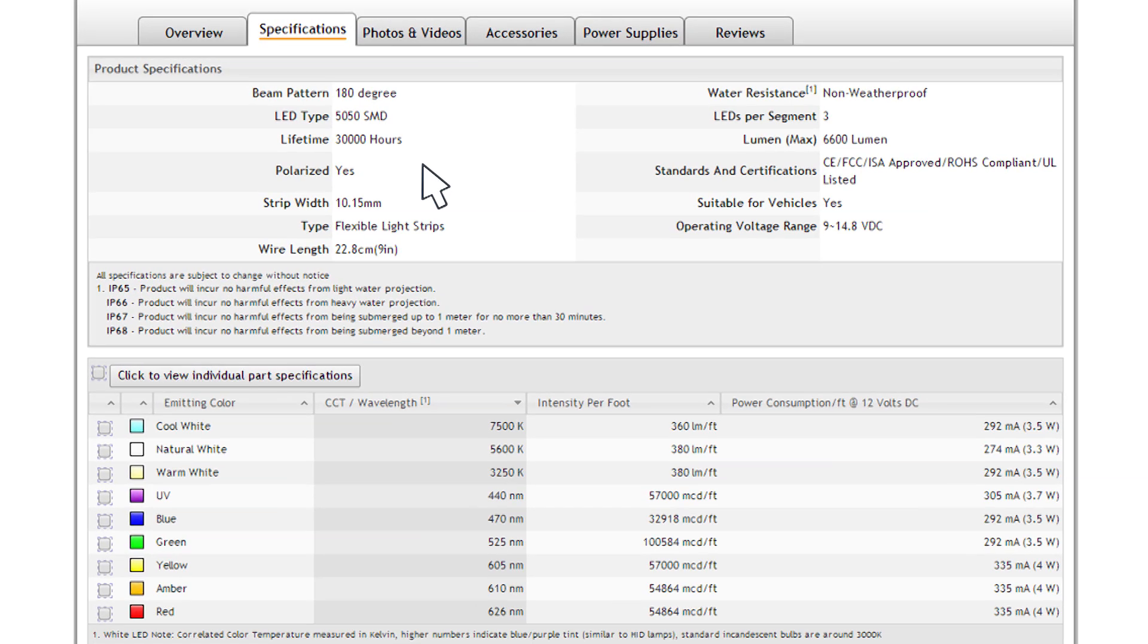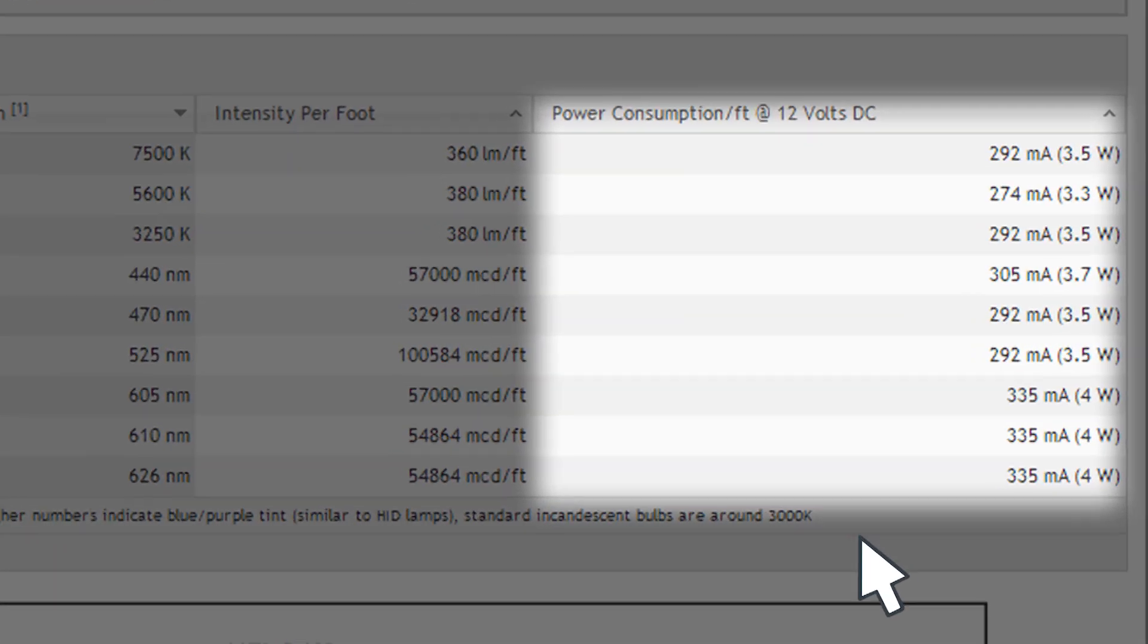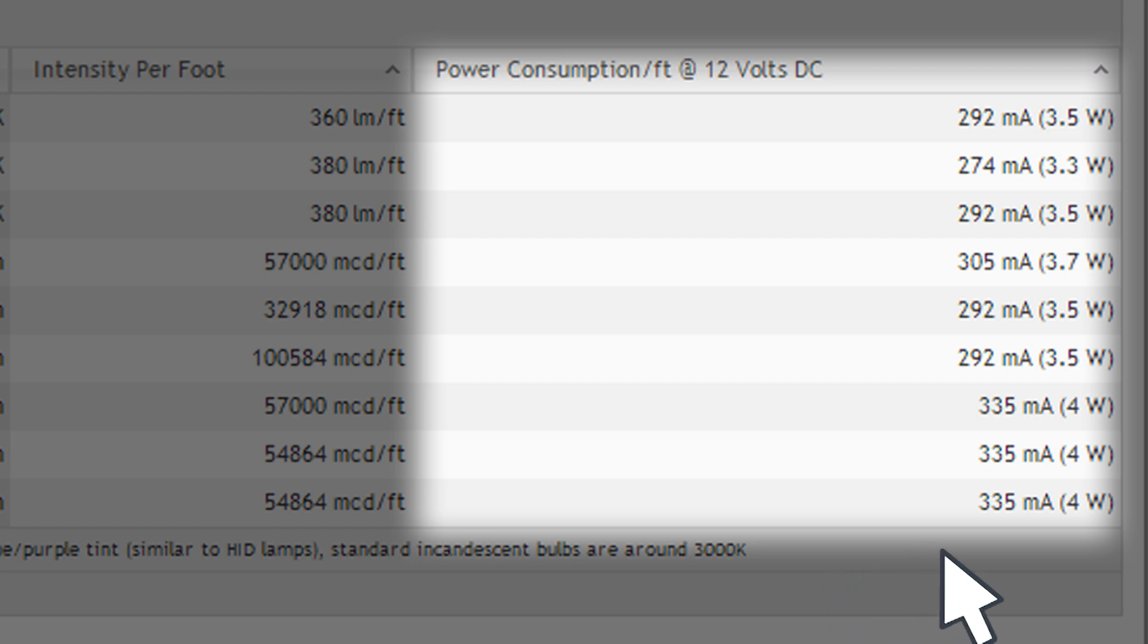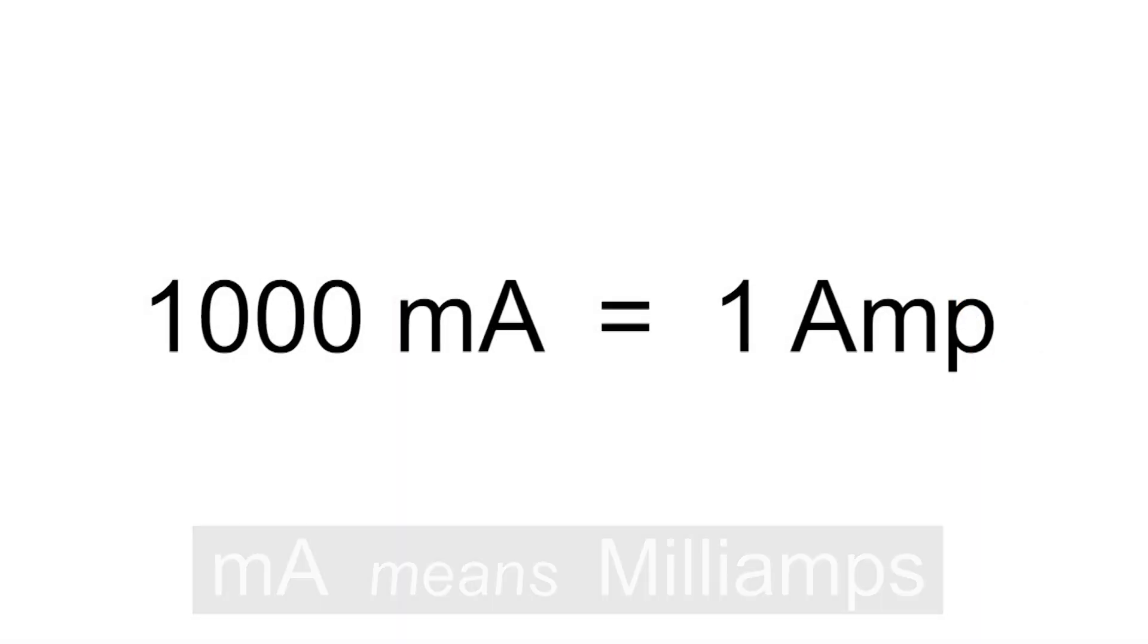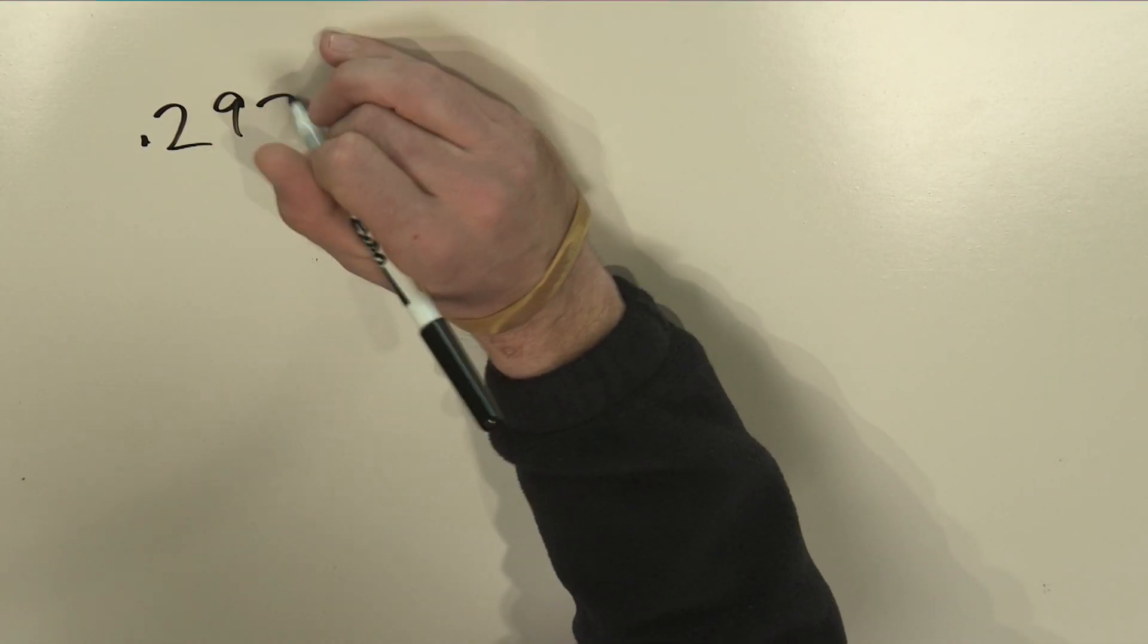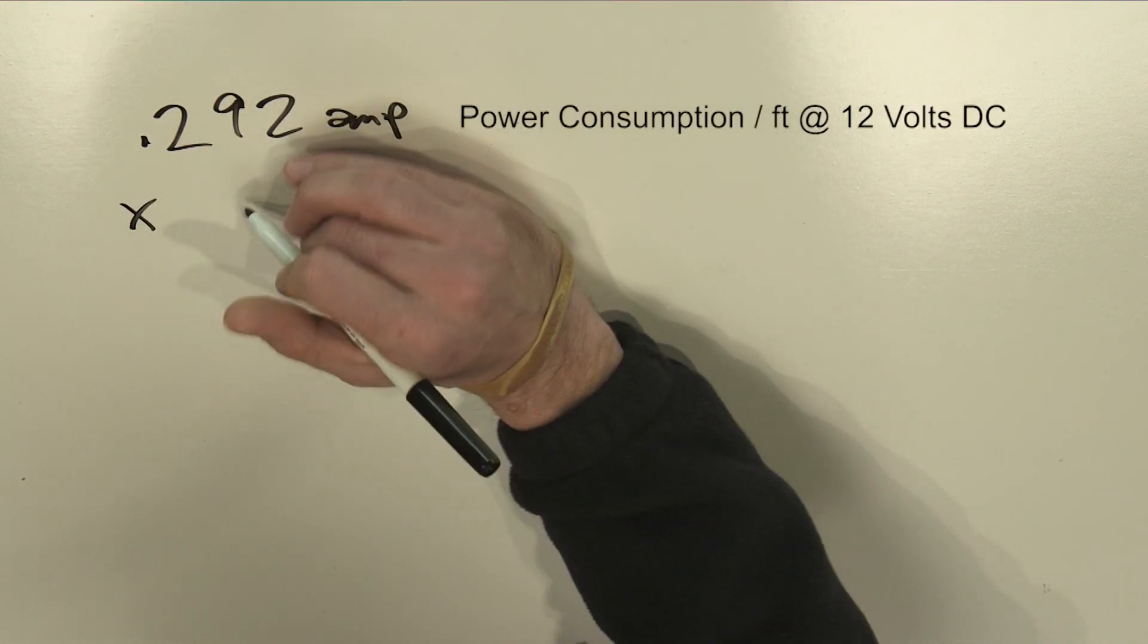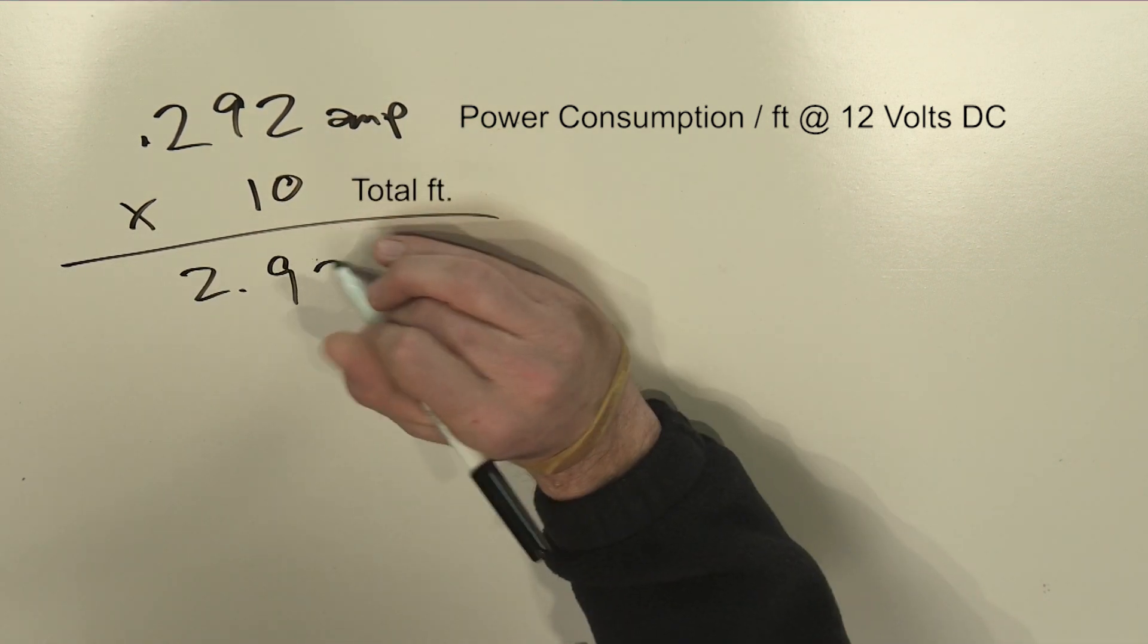On the product page for the strip, in that same column you'll also see a rated amperage per foot of the strip, listed in a number with MA. That MA is milliamps, and there are 1000 milliamps per amp. So if we have 292 milliamps, that's actually 0.292 amps, and if we want to use 10 feet of strip, we multiply that by 10 feet, giving us 2.92 amps.